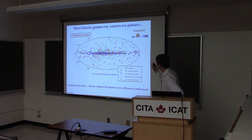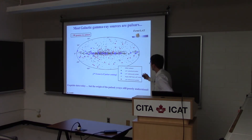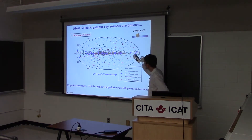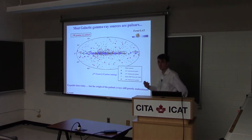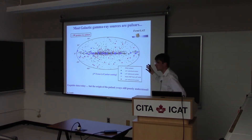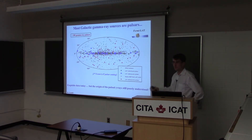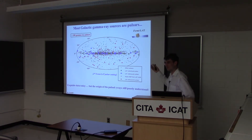What you can see here is a map of the whole sky where all these dots are pulsars. All the dots with colors are pulsars that were detected by Fermi. There are about 100 such pulsars discovered in our galaxy, and it turns out that most of the gamma-ray sources are, in fact, pulsars.